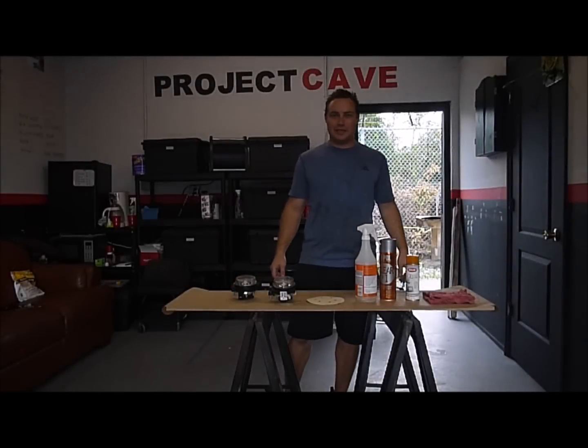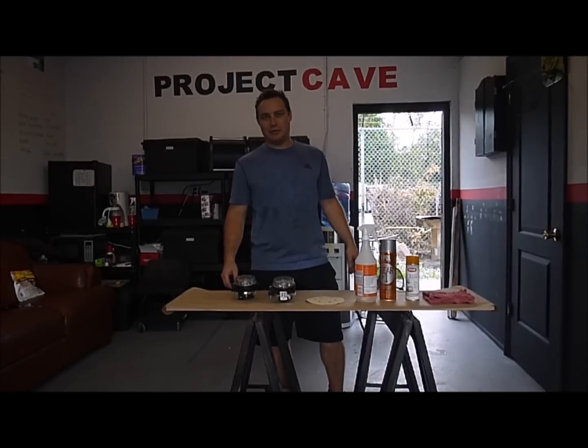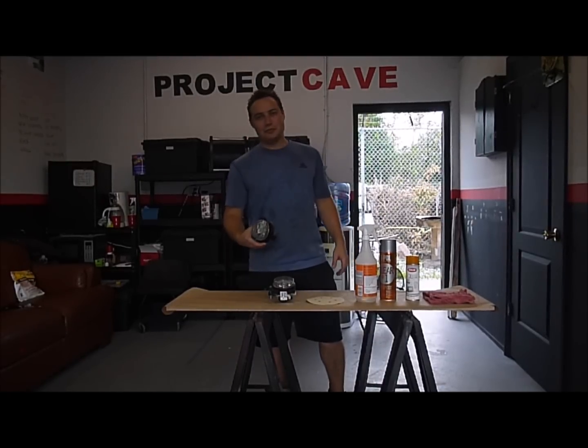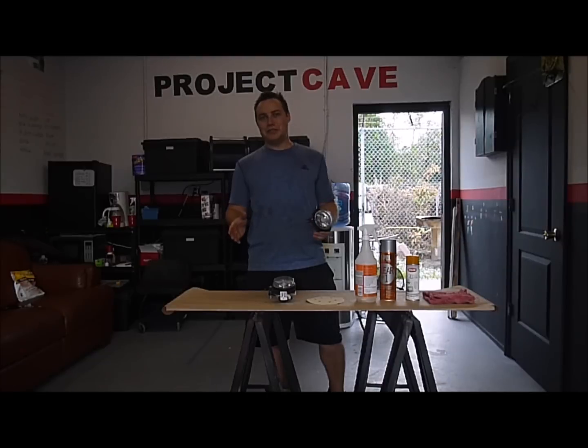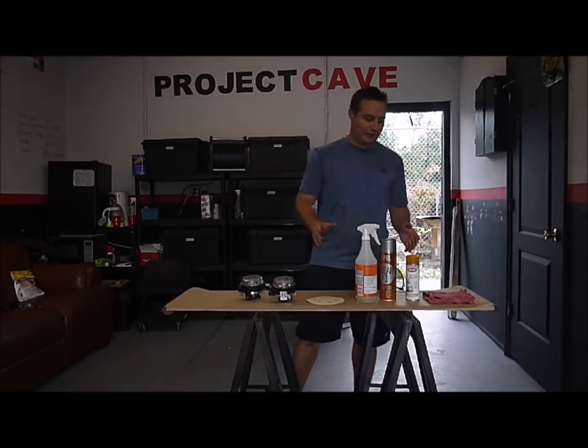What's up everybody? Donald from Project Cave here again for another fun and easy DIY. Today we're going to be taking the fog lights off of a 2003 Mitsubishi Eclipse and we're going to be attempting to go for the JDM look and we're actually going to tint the taillight yellow using really only five products.